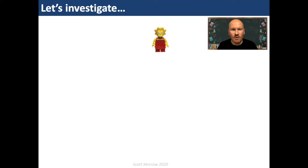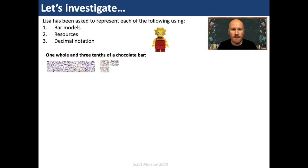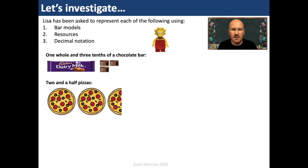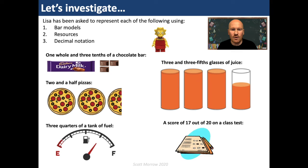It's time to get investigating with a partner. Lisa has been asked to represent each of the following using bar models, resources and decimal notation: one whole and three tenths of a chocolate bar; two and a half pizzas; three and three fifths glasses of juice; three quarters of a tank of fuel; and a score of 17 out of 20 in a class test. Draw bars to represent each of these fractions, use base ten materials to represent each number, and write them in decimal notation. Pause the video for eight to ten minutes and then share your thoughts with the class.